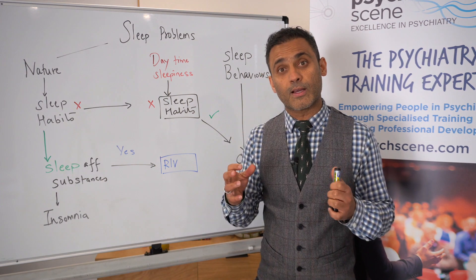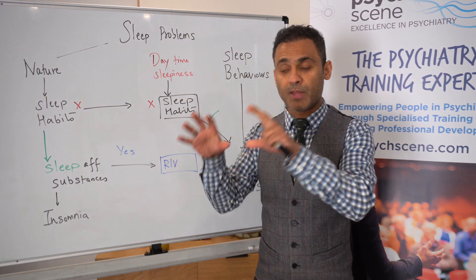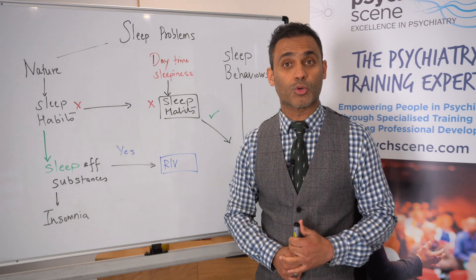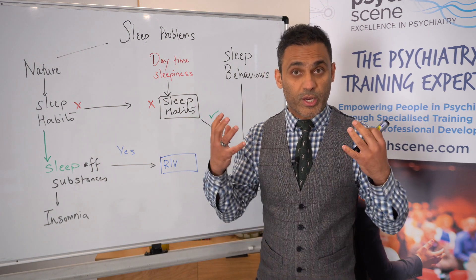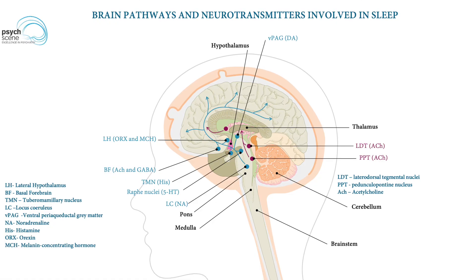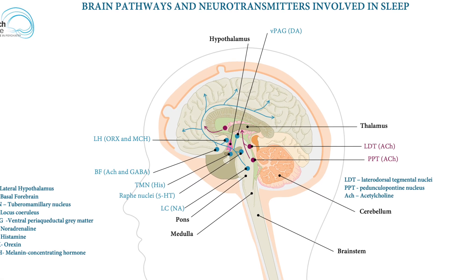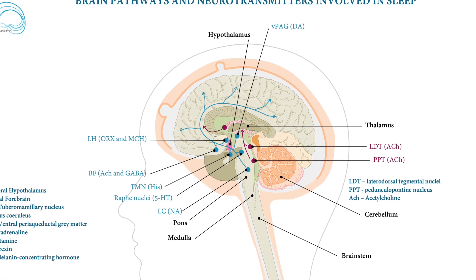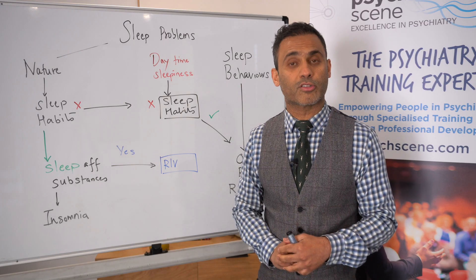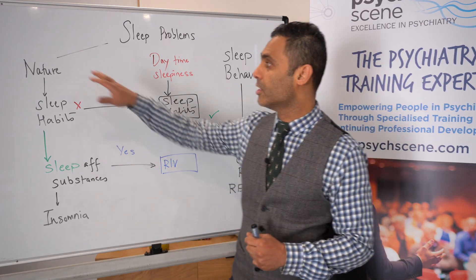It's really important to think about sleep disturbances and ruling out comorbid psychiatric disorders, because sleep arousal systems are present in the brain and the same areas can be affected in a number of psychiatric disorders as well.